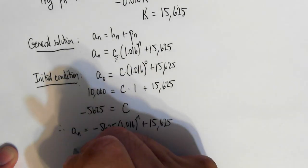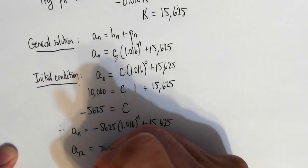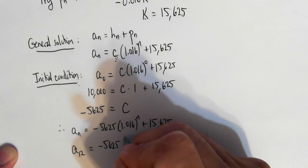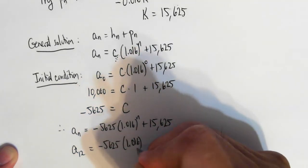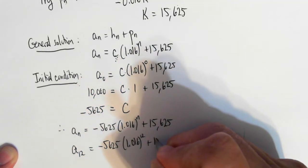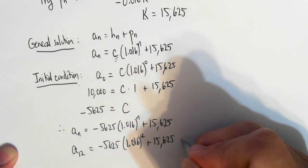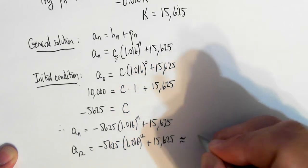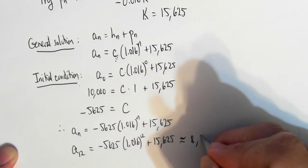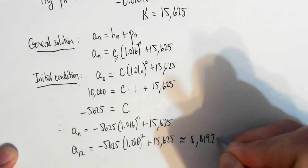So the question asks for the value of a_12, negative 5,625 times 1.016 to the 12th plus 15,625. And that's approximately equal to $8,819.70.